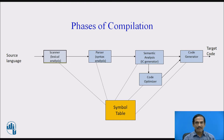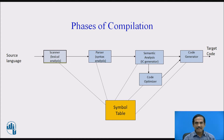The symbol table records all the identifiers used in a source program. It has information about them like storage allocation, type, scope, and where in the program they are valid. For procedure names, it records information about the number and types of its arguments, method of passing, and type returned. The error handler detects errors at every phase to reduce the errors in subsequent phases.